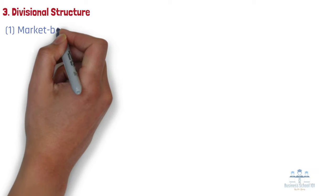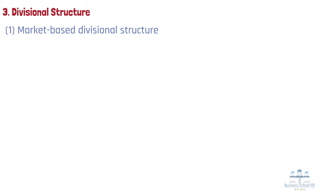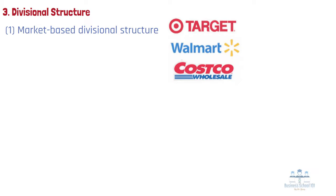Number 1: Market-based divisional structure. Divisions are separated by market, industry, or customer type. A large consumer goods company, like Target, Walmart, or Costco, might separate its durable goods — such as clothing, electronics, and furniture — from its food or logistics divisions.